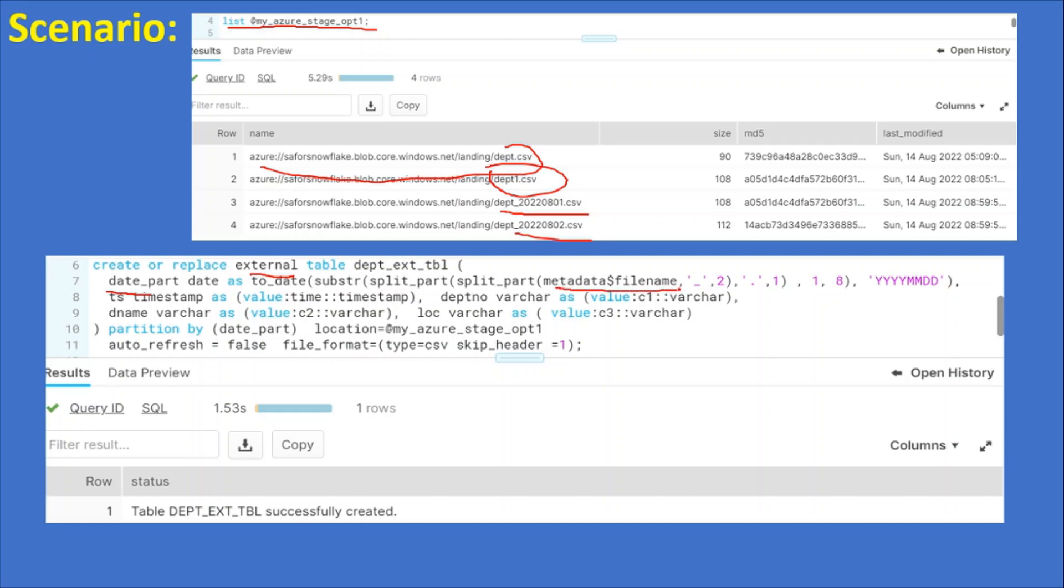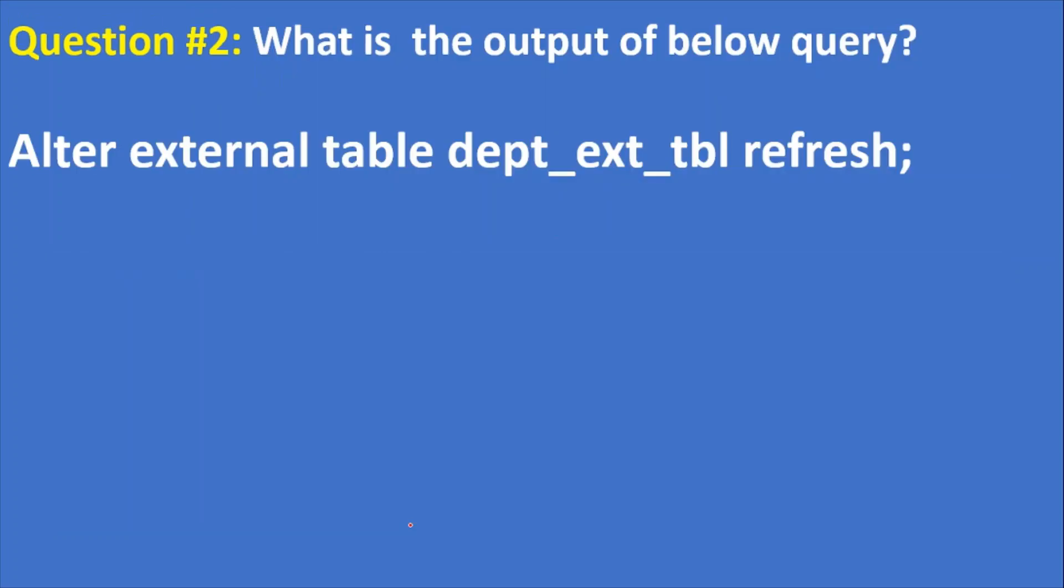Partition by date_part, location is here, auto refresh is equal to false, file format equal to CSV, skip header is equal to one. So table dept_ext_tbl successfully created.